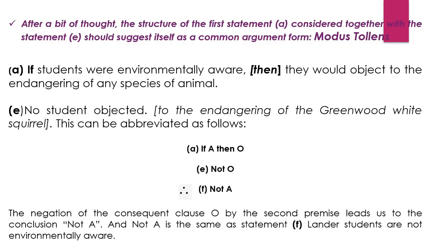Keeping this in mind, let's read the first proposition: 'If students were environmentally aware, then they would object to the endangering of any species of animal.' The 'then' is implied — it is a hypothetical statement like 'if A then O'. Now, E: 'No student objected', which is similar to 'not O' — the consequent of the hypothetical statement is being denied. From these two premises, as per modus tollens, it follows that it is not the case that A — that is, students are not environmentally aware. So the negation of the consequent O by the second premise leads to the conclusion not A, which is the same as statement F: 'Lander students are not environmentally aware.'